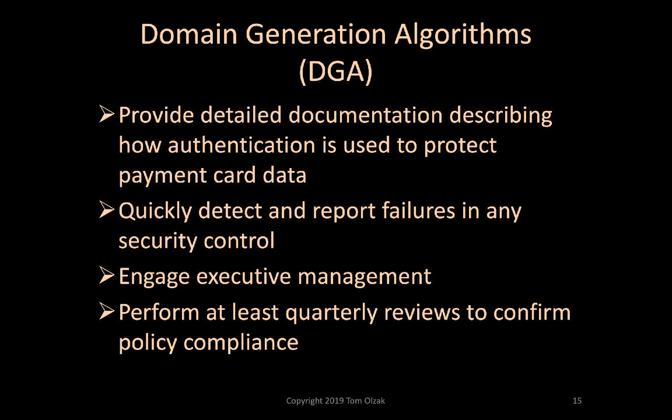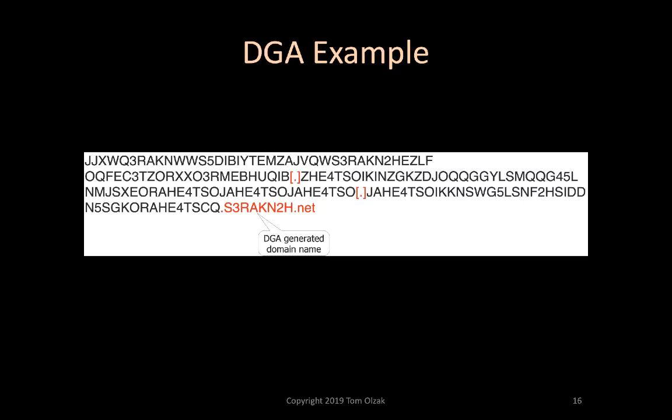Domain generation algorithms, or DGA, are used by MA frequently to create new domain names. A DGA often uses a seed and a changing value to create these names. A popular changing value is current date and time. MA register these new names, and infected systems begin using them as configured in the installed tunneling kit. New names are often created every day, and seeds are changed as needed. This is what a DGA-created domain name might look like. DGA makes it challenging to keep up with malicious domains for inclusion in an RPZ.